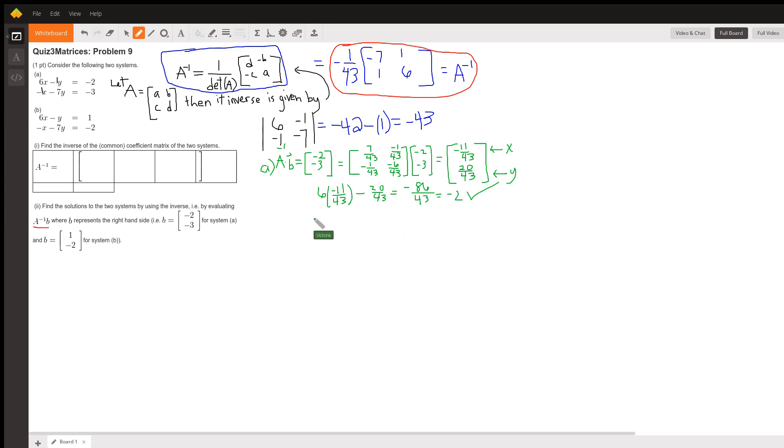Let's try it for the bottom. This is negative x, so that's going to make this a positive 11 over 43, minus 7 times 20 over 43. That makes this 11 minus 140, makes this negative 129 over 43, and that equals negative 3 just like it's supposed to. So this is the correct solution to part A.